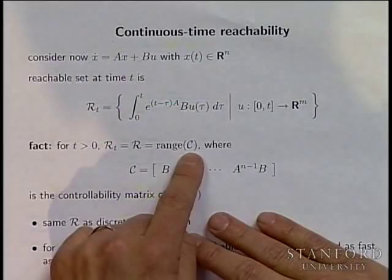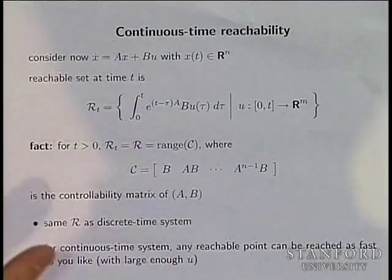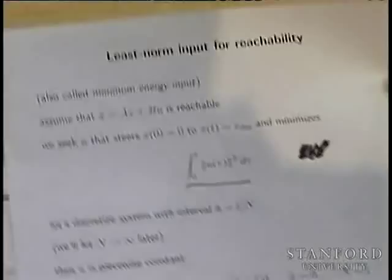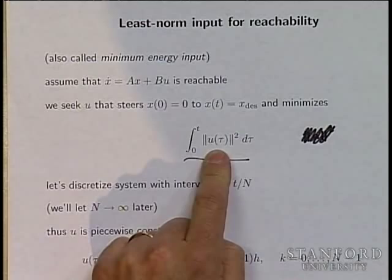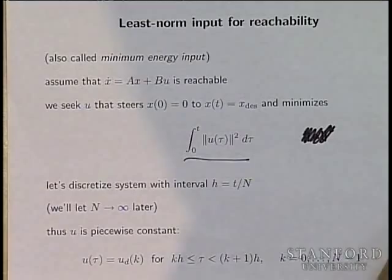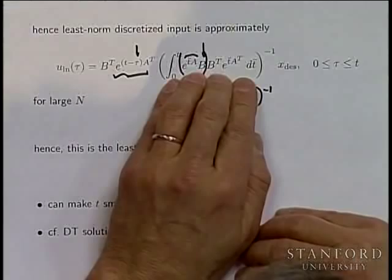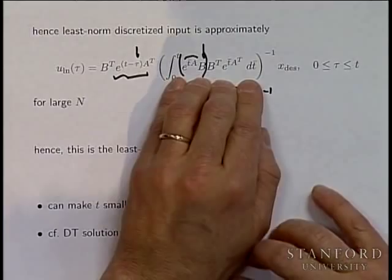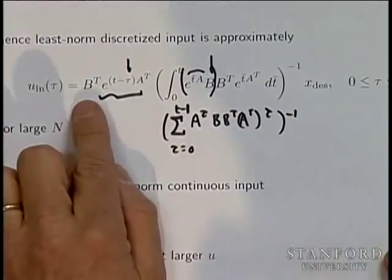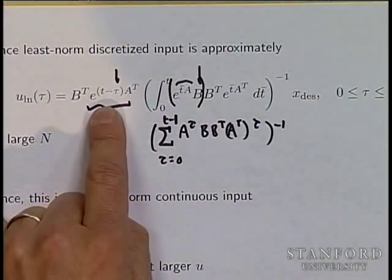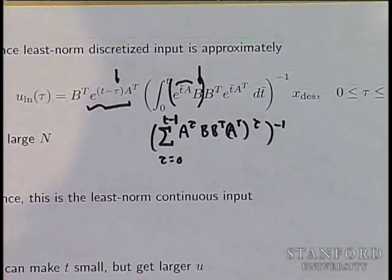What will change, of course, is the size of the input required to hit a target state if you do it quickly versus over a long, leisurely timeframe. For the least norm input for reachability, you're looking for the input that minimizes the integral of the square of the norm of u. We worked through that by discretizing it. The formula that came out involves an integral of a positive definite matrix, an inverse, multiplied by B transpose times e to the (T minus tau) A — the system running backwards in time. All parts correspond perfectly to the discrete time case.